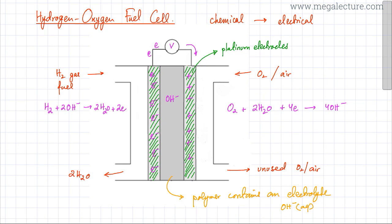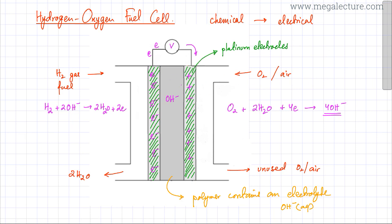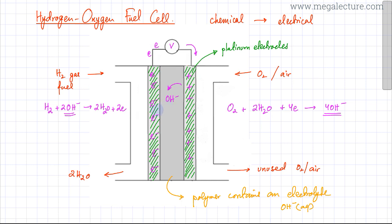On the right-hand electrode, OH⁻ ions are being produced, so the quantity of OH⁻ ions in the electrolyte increases. On the left-hand electrode, OH⁻ ions are being consumed. This means there is a net flow of OH⁻ ions from right to left within the electrolyte.